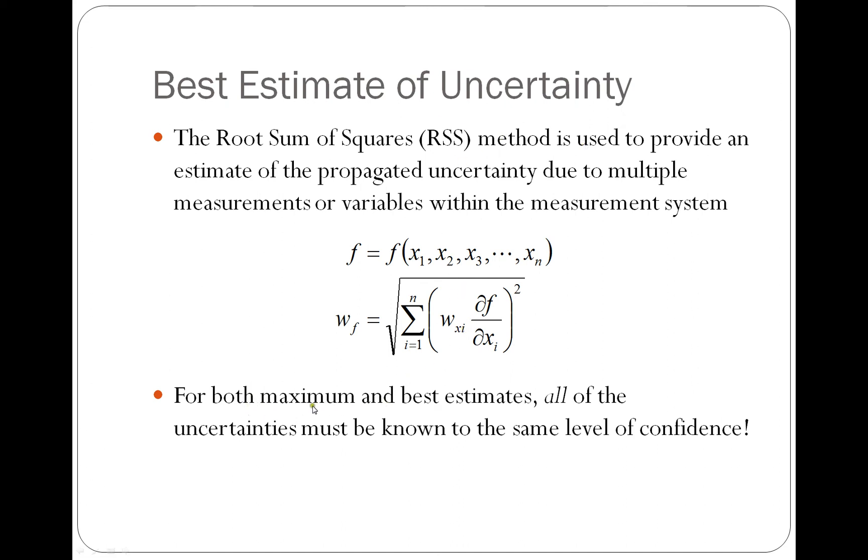So for both the maximum and the best estimate uncertainty, all of the uncertainties must be known or provided at the same level of confidence. So if all of the uncertainties, these W values, are known for 90% confidence interval, then our final combined uncertainty, our best estimate, or our maximum uncertainty will also have a 90% confidence level with it. What we'll do is we're going to go through some examples in the next video to show how we actually implement this.